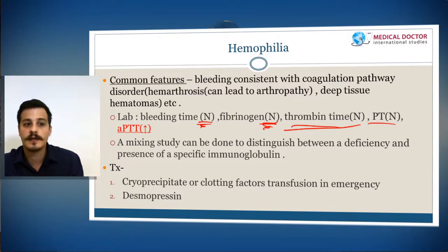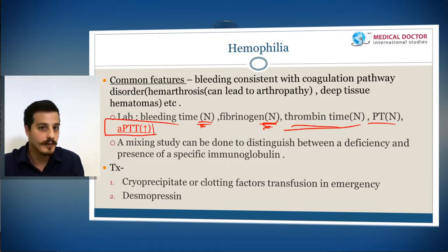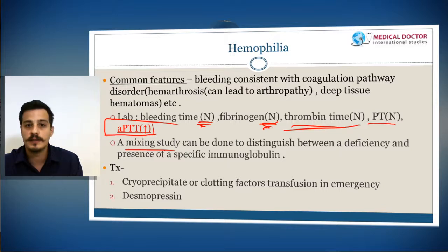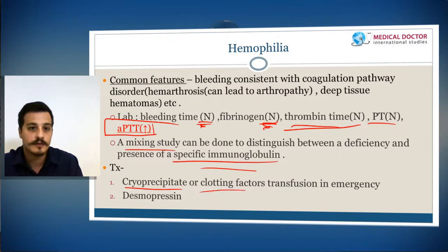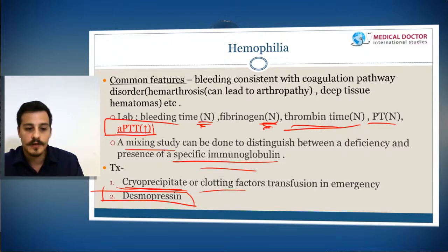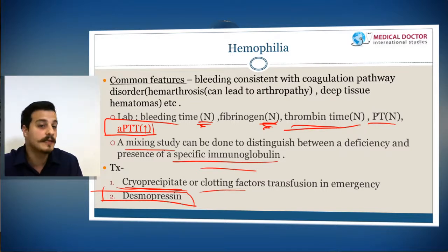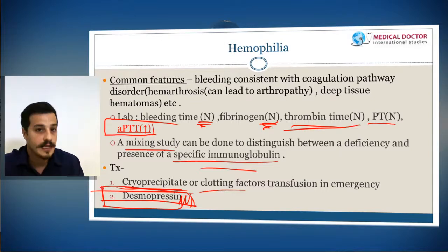A mixing study can distinguish factor deficiency from an inhibitory immunoglobulin. Therapy may involve cryoprecipitate or fresh frozen plasma containing the missing factor. Desmopressin causes release of von Willebrand's factor from endothelium; since von Willebrand's factor protects factor 8, desmopressin is useful in mild hemophilia A to elevate available factor 8 levels.